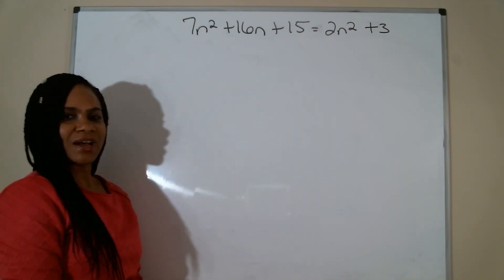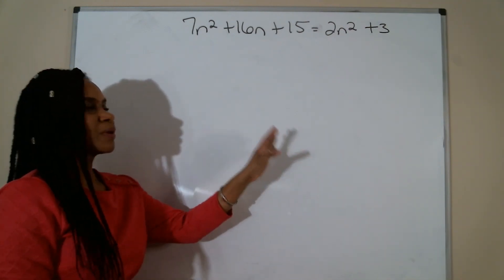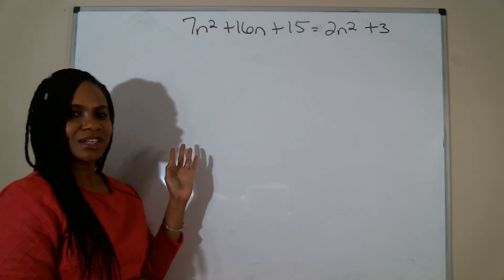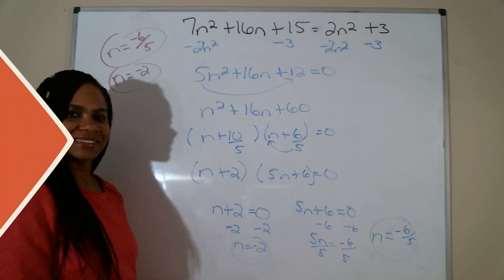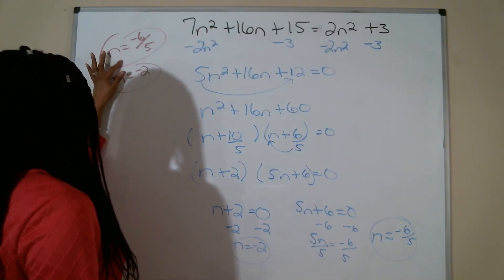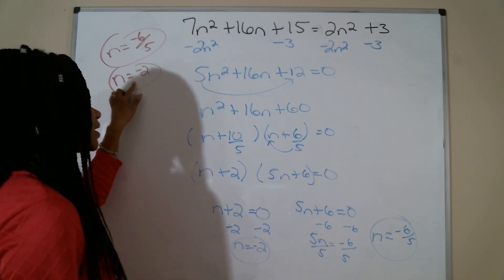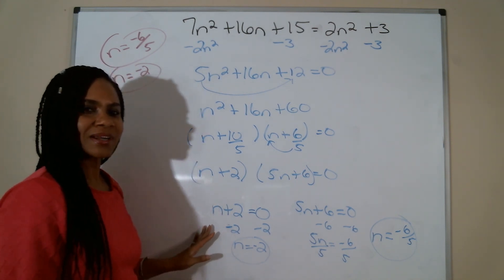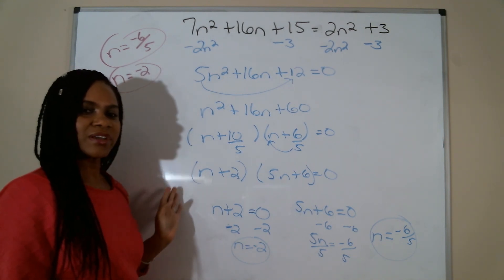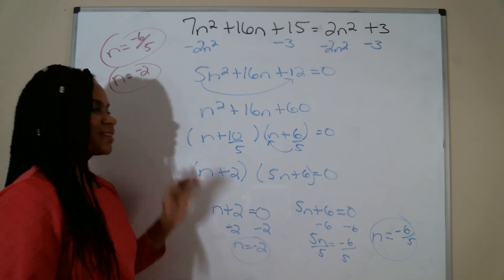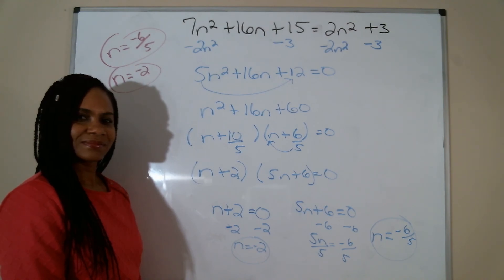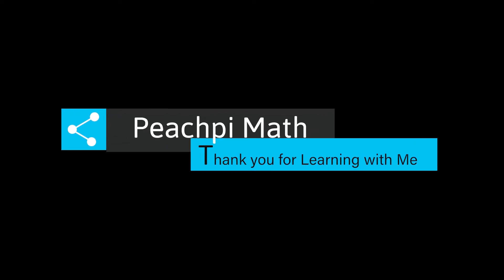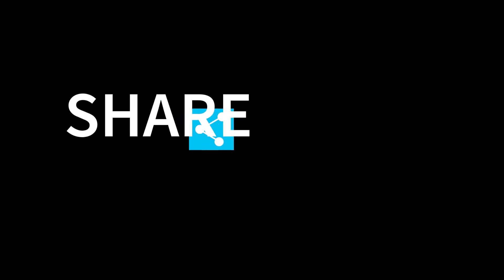I have this problem here that I would like for you to try on your own. Remember to move everything to one side to combine your like terms. Go ahead and pause the video and try this problem on your own. You should have gotten n is equal to negative 6 fifths and n is equal to negative 2. Hopefully you got the problem correct. If you did not, pause the video here and analyze my work a little bit more. This is our last problem. So I want to thank you for learning with me. Thank you.